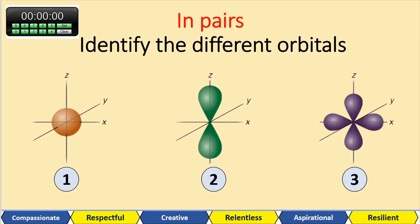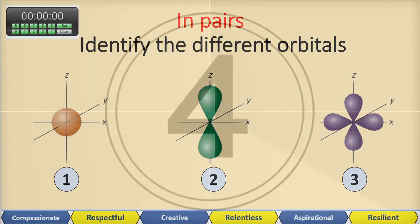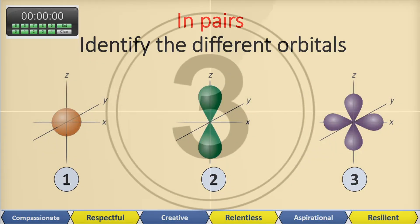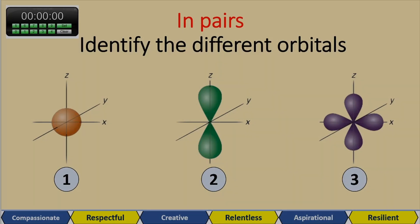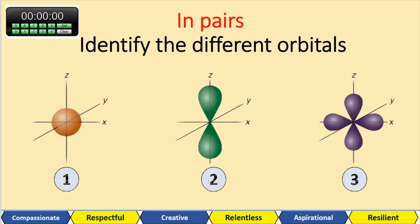If you're revising in pairs or by yourself, have a go at identifying the different orbitals. One was the s orbital, two was p, and three was the d orbital.